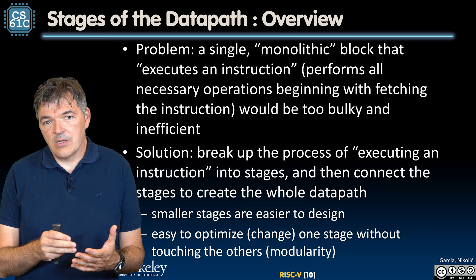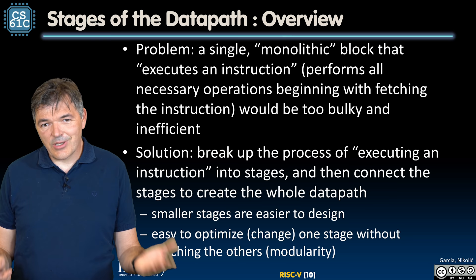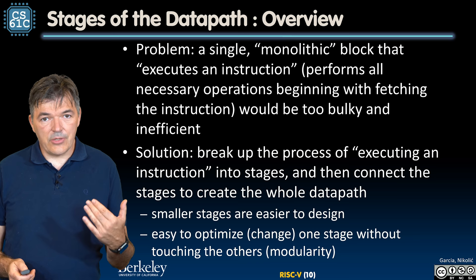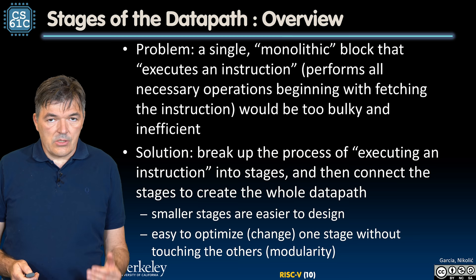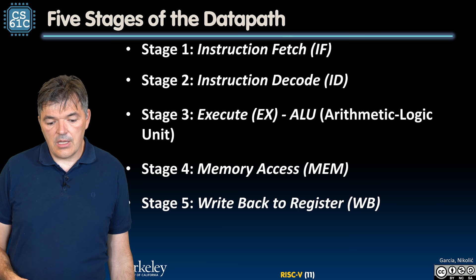Not all instructions have all phases of execution, but most have at least some of them. To see what that means, let's look at the common phases of execution that correspond to separate stages in a data path. Stage one is instruction fetch, stage two is instruction decode, stage three is execute, stage four is memory access, and stage five is write back to registers.